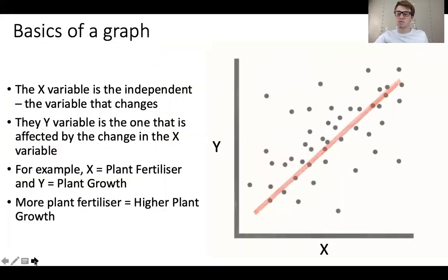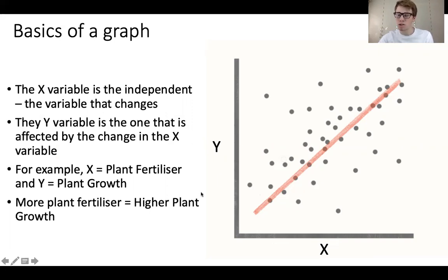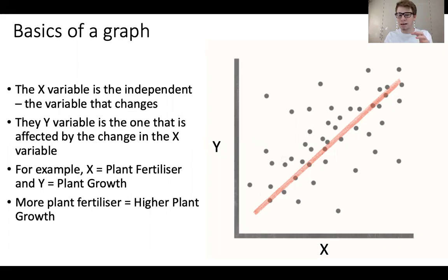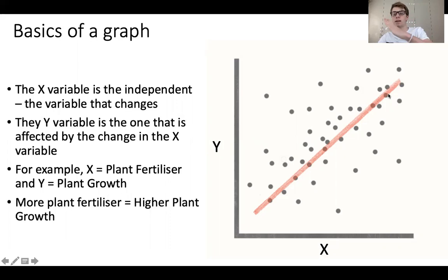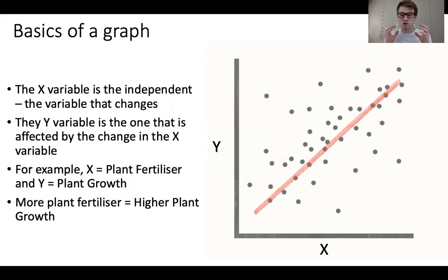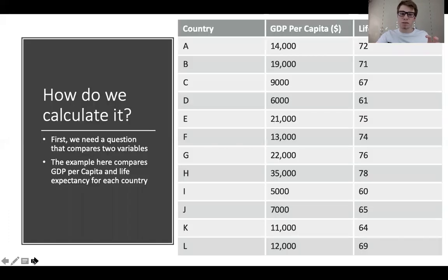Going back to graph basics: the X variable on the flat axis is the variable that you decide to change, and the Y variable on the vertical axis is the one affected by the change in X. For example, X is the level of plant fertiliser in a field, and Y is the level of plant growth. The graph shows that more plant fertiliser generally leads to an increase in plant growth — a positive correlation. What Spearman's does is assess how strong that relationship is.